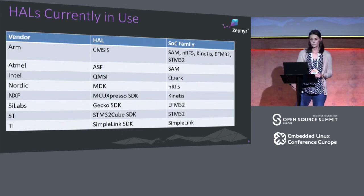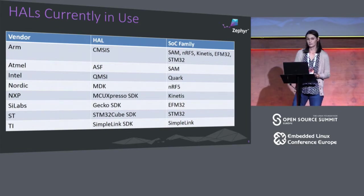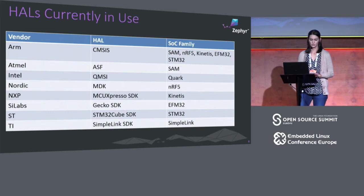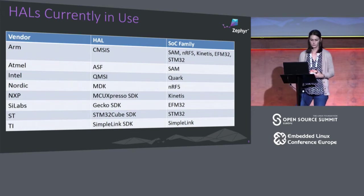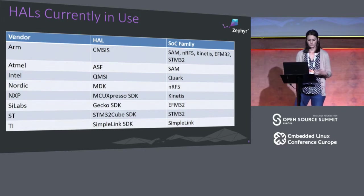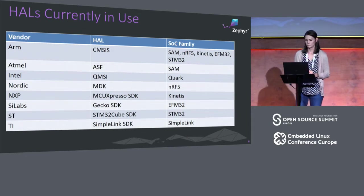We've had quite a bit of success using a pretty wide range of HALs across the ecosystem. This list is in alphabetical order, and one thing you might notice is this is not unique to ARM either. We do see a lot of ARM vendor HALs that are all built on top of something called CMSIS, which I'll cover in a minute. But you also see the Intel QMSI. We have quite a variety of HALs — ranging from NXP to ST to Nordic — and I'd say probably more SoCs than not are actually using these.